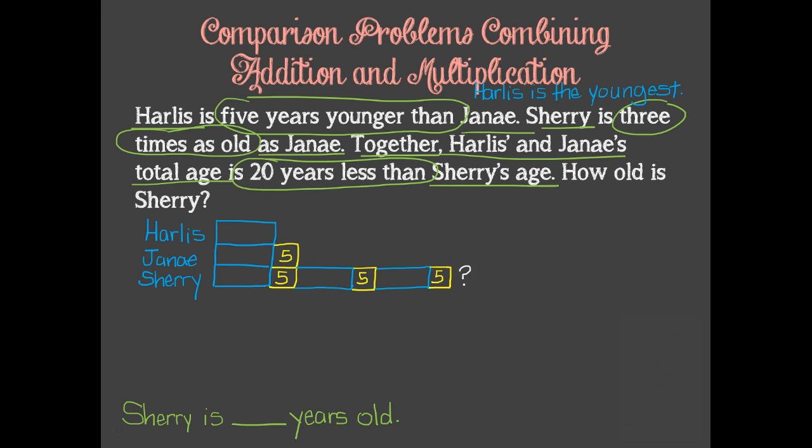Then we are told that together, Harless's and Janae's total age is 20 years less than Sherry's age. We can reflect that on Sherry's bar, which means that these pieces right here are equivalent to Harless's and Janae's age together. So if their combined age is 20 years less than Sherry's, then that means that Sherry is 20 years older than their combined age, which means that this remaining section is equal to 20.